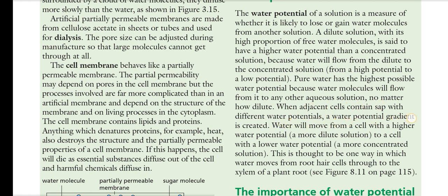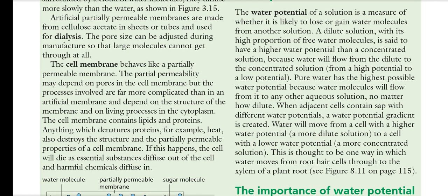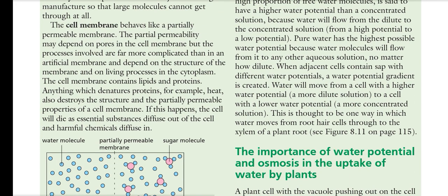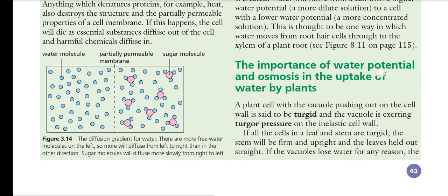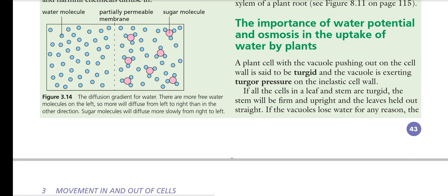When adjacent cells have a different water potential, a water potential gradient is created. Water will move from the cell with higher potential (dilute solution) to the cell with lower water potential (more concentrated solution). The core topic of today's lecture is the importance of water potential and osmosis in plants and animals.